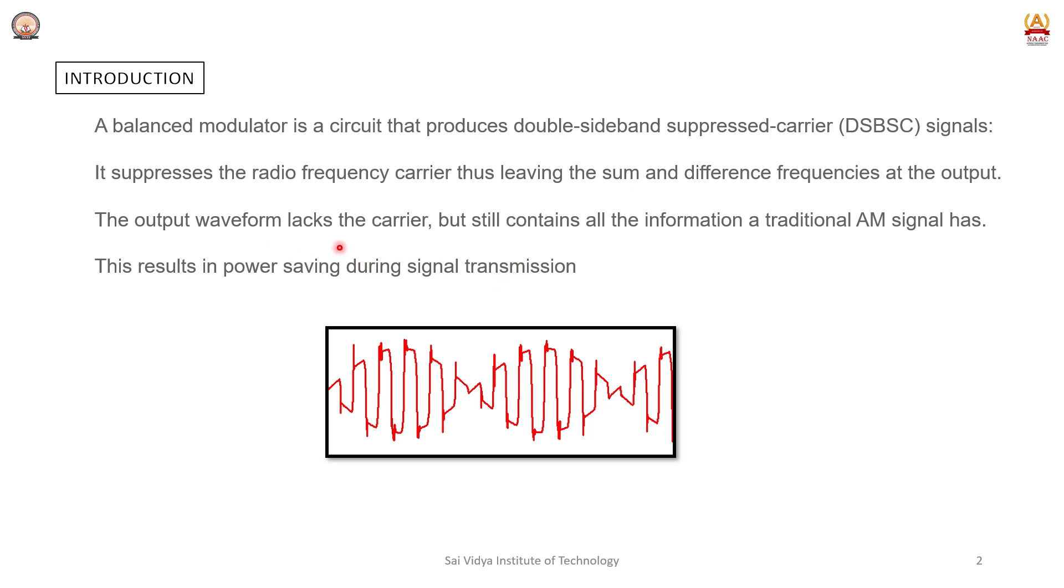Since the output lacks the carrier but still contains the information from traditional AM signal, the power can be saved during signal transmission. This is the waveform of double sideband suppressed carrier.